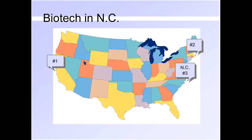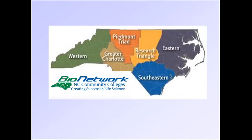North Carolina is number three in the nation for the number of biotechnology companies, and a great deal of resources have been committed by the state's leaders to ensure continued growth. Future jobs will depend on science and technology skills, and preparing that workforce is paramount. Initially there were six BioNetwork centers established in 2004, each located in one of the major geographic regions of the state with a specific focus for industry and college support. A seventh center was added in 2008.